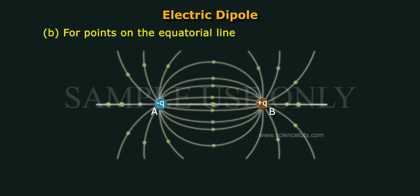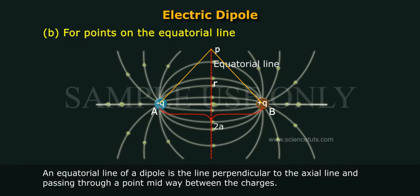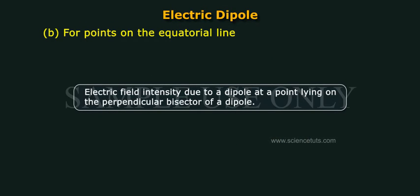For points on the equatorial line. An equatorial line of a dipole is the line perpendicular to the axial line and passing through a point midway between the charges. We consider the electric field intensity due to a dipole at a point lying on the perpendicular bisector of the dipole.